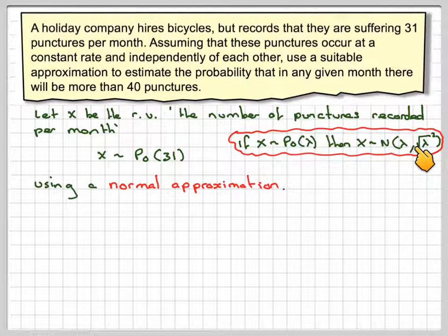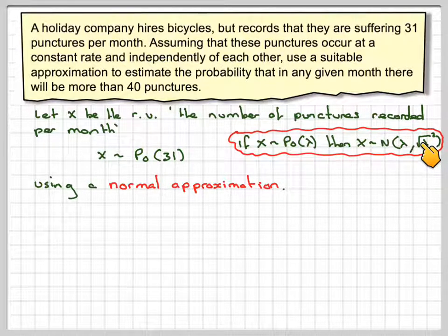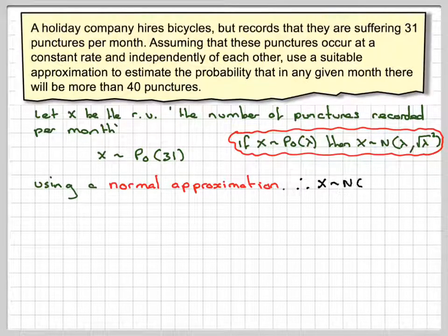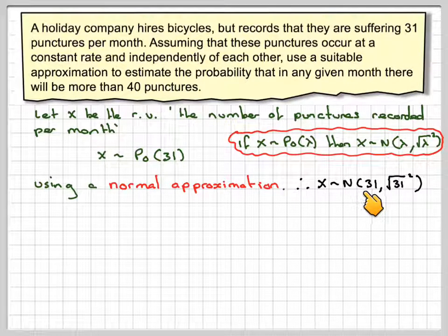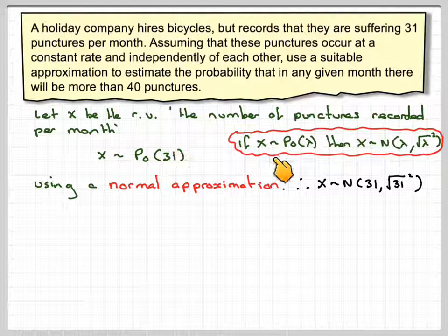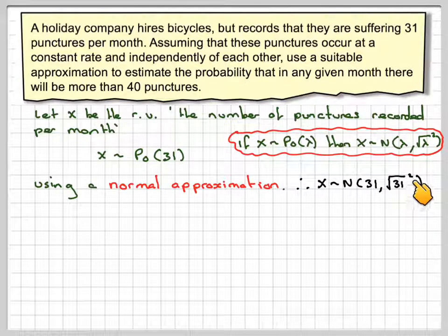comma, square root of lambda squared. Now we write square root of lambda squared because when we standardize, we'd like to use the square root of lambda. So X will be normally distributed 31, because the mean is 31, square root of 31 squared.